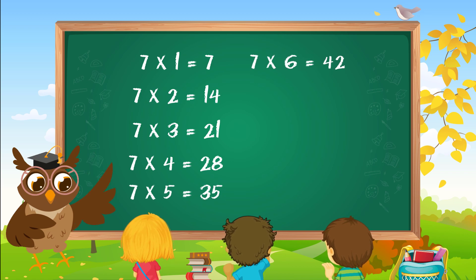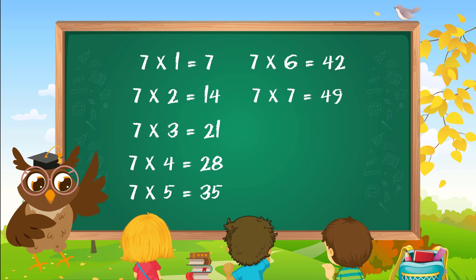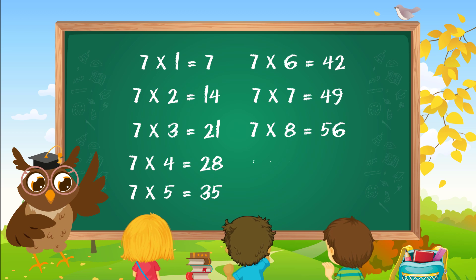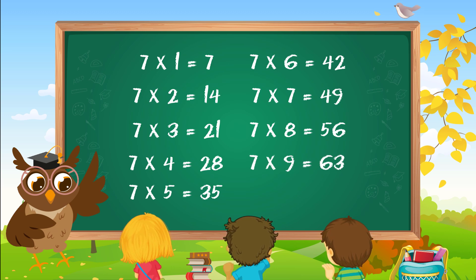Seven sixes are forty-two. Seven sevens are forty-nine. Seven eights are fifty-six. Seven nines are sixty-three.